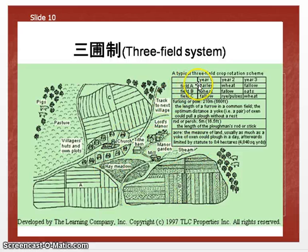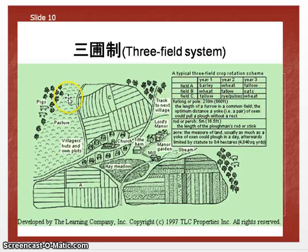The slide shows what was grown in each field at what year. Again, this allowed the soil to come back to its normal level.